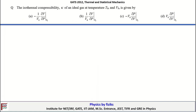In this video, we are going to discuss the questions in thermal and statistical mechanics which appeared in the GATE 2012 examination. Let's continue with the first problem. The statement is: the isothermal compressibility kappa of an ideal gas at temperature T-naught and volume V-naught is given by.